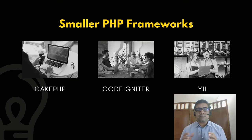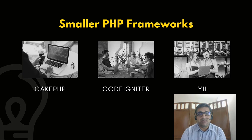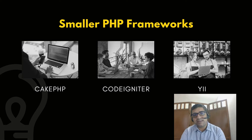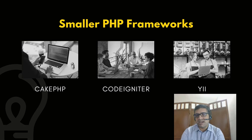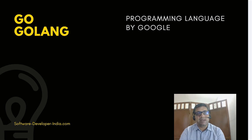There are also some smaller PHP frameworks: CakePHP, CodeIgniter, and YII. These were used for small PHP applications and are still found in older projects. But people are generally moving from CodeIgniter solutions to Zend, Symfony, or Laravel. Go (or Golang) is a programming language created by Google — you will find some people using it to build web applications, and you should be aware it exists.